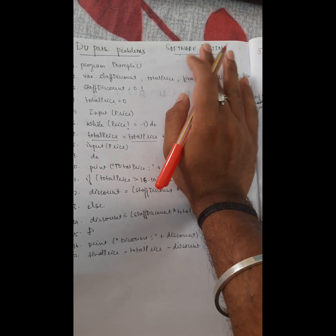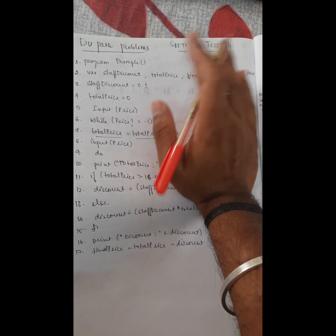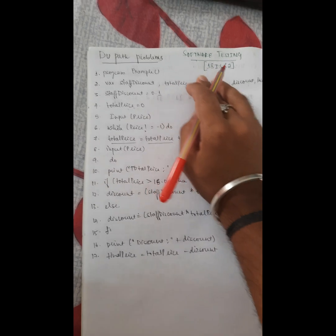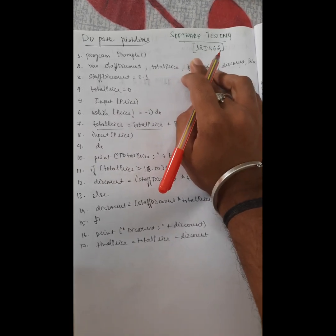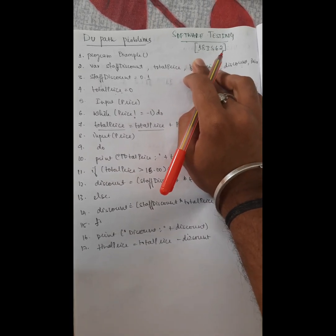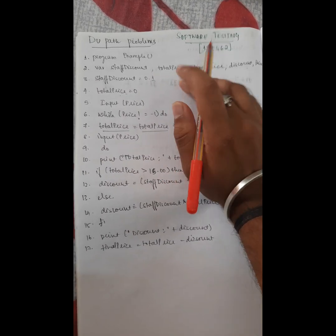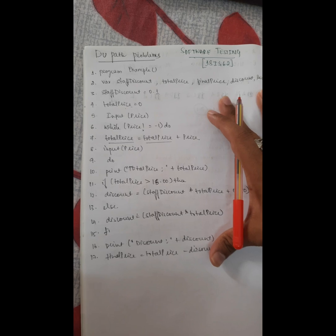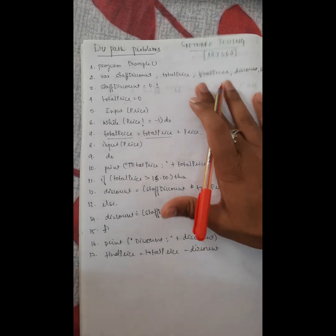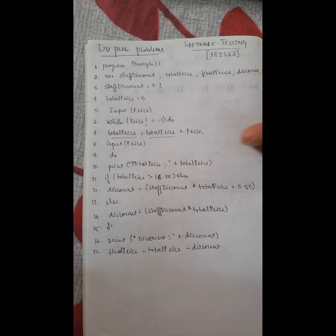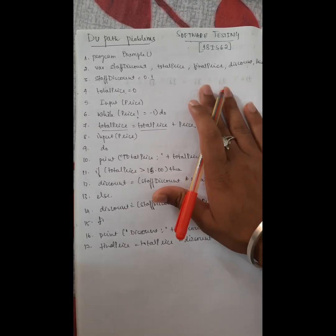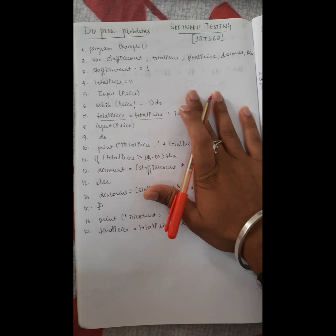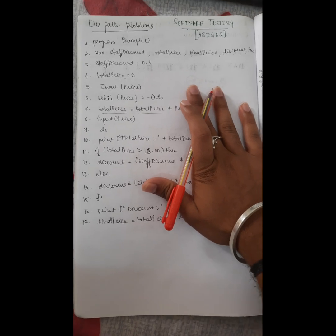Today we will be learning about the DU path problems in software testing with the code 18IS62. A program has been given, and seeing this program we will be writing the DU path, learning how to solve the problem.